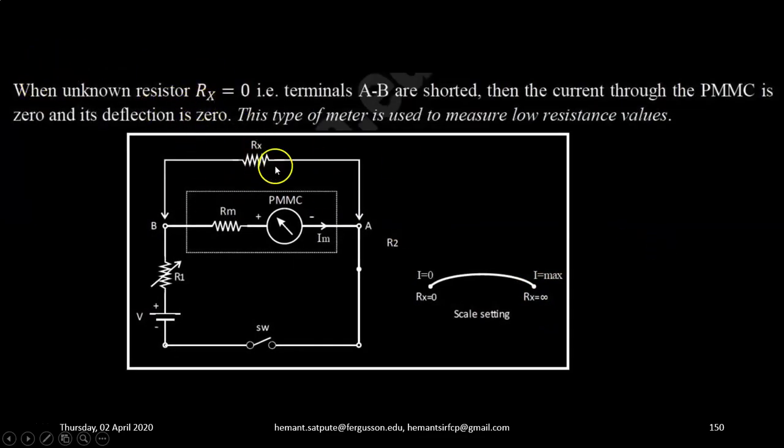When unknown resistance Rx is 0, that is, terminals A and B are shorted, then the current through PMMC is 0, and its deflection will be 0.